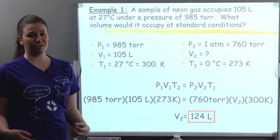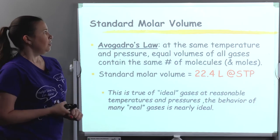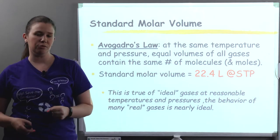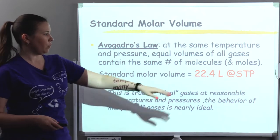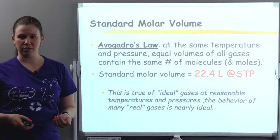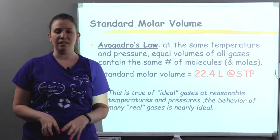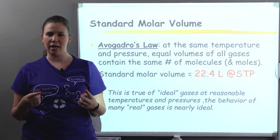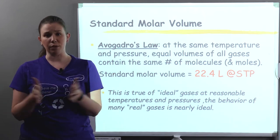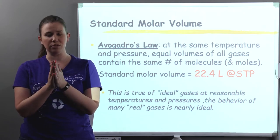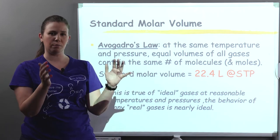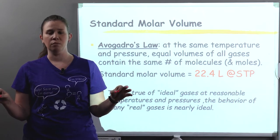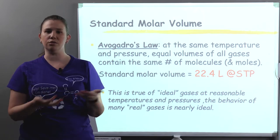That's our first example dealing with six different variables — our combined gas law. Let's look at standard molar volume next. Molar volume is all based around Avogadro's law. Let's recap: 22.4 liters equals one mole at standard temperature and pressure. What Avogadro's law basically says is that if I have a certain number of particles, that would equal the same volume comparing two gases, regardless of what the gases are — because gases are compressible, so the spacing between particles can change.